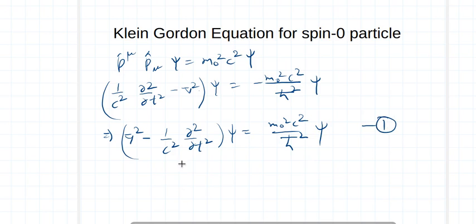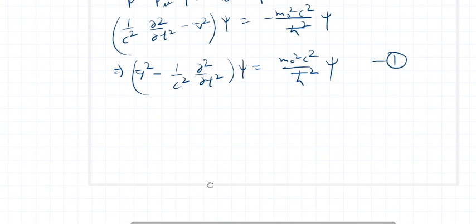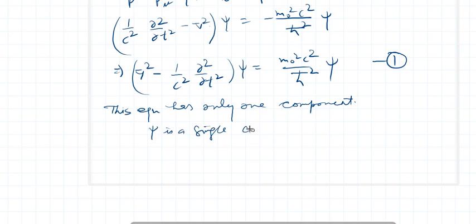Now if we try to look at this equation, this equation has only one component. ψ is a single component.